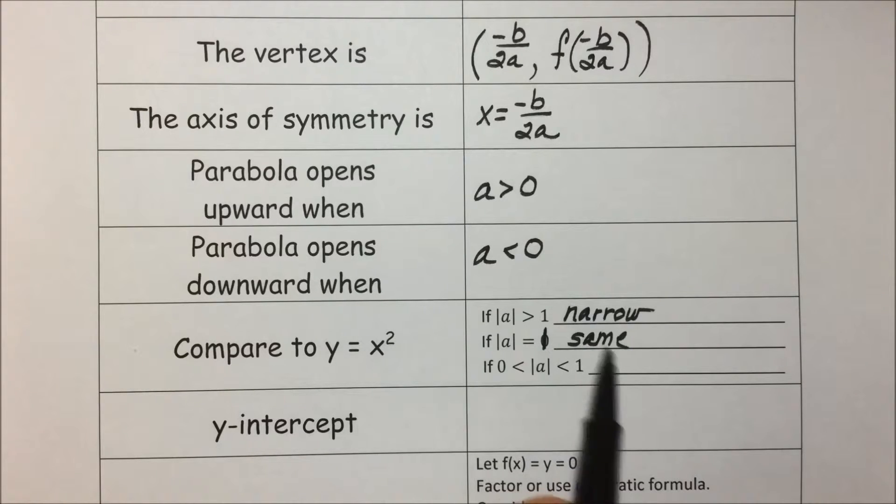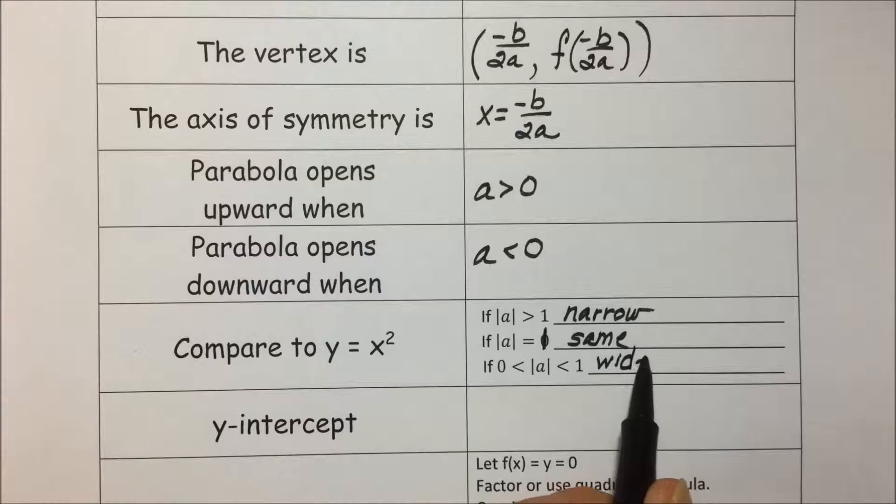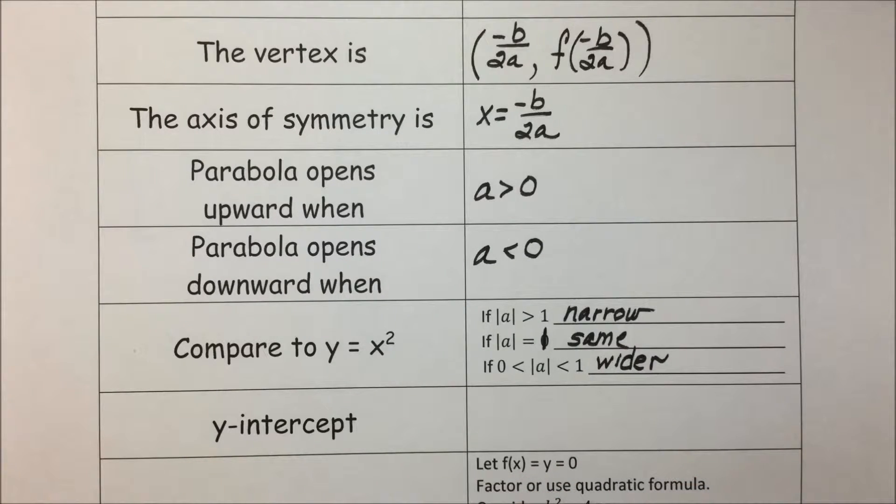is a rational number between 0 and 1, then we have a squatty, much wider, slower to approach infinity than the generic y = x² term.